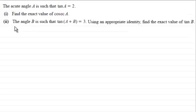And in the second part, the angle B is such that the tan of A plus B equals 3. And using an appropriate identity, find the exact value of tan B.